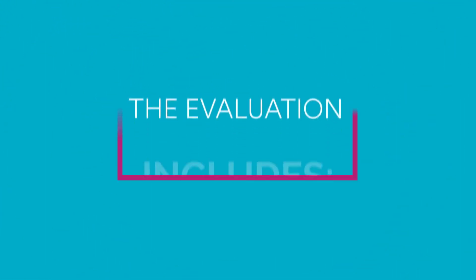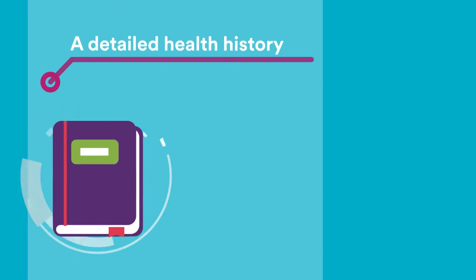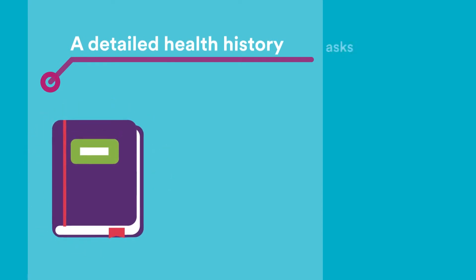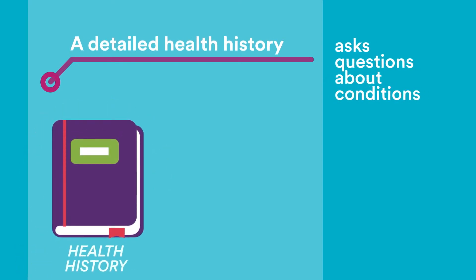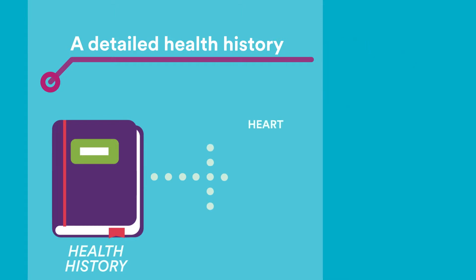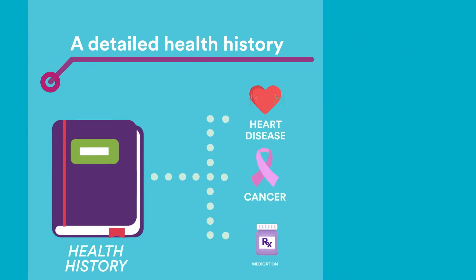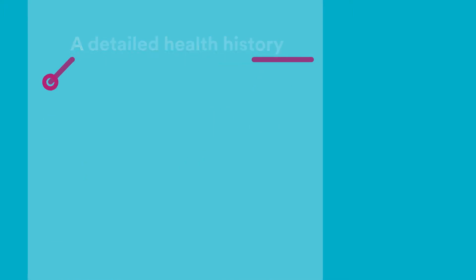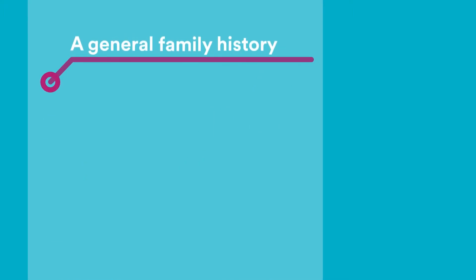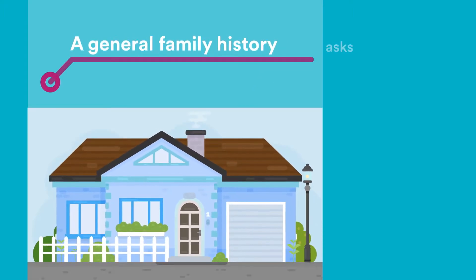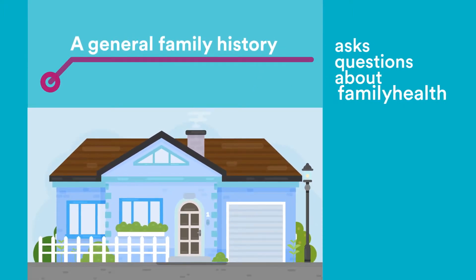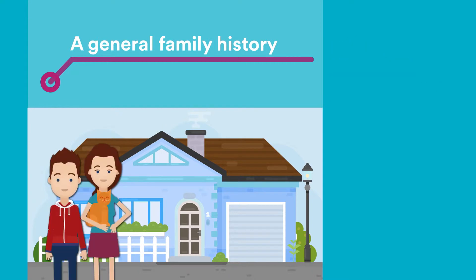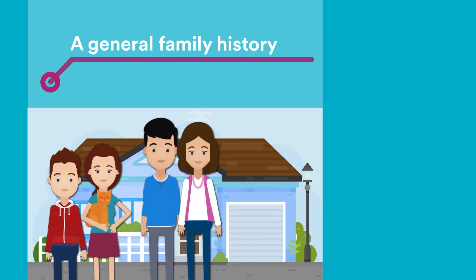The live kidney donor evaluation includes the following. A detailed health history asks questions about conditions you may have, like heart disease, cancer, or medication you take. A general family history: similar to your own health, you will be asked about the health of siblings, parents, and grandparents.